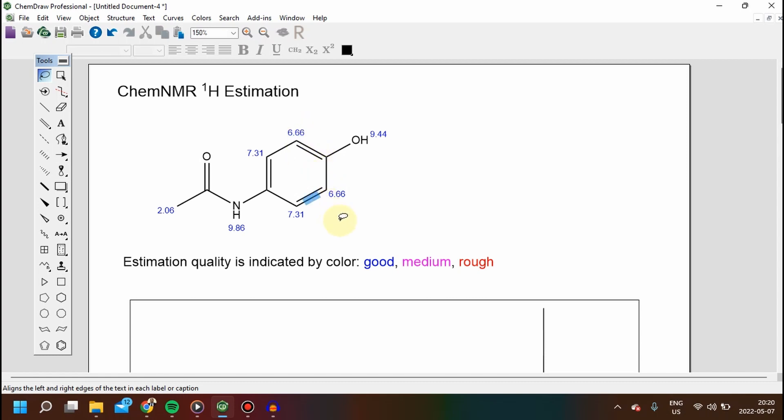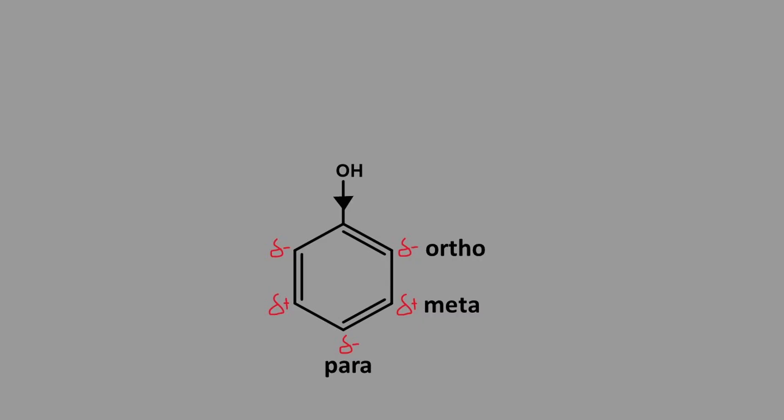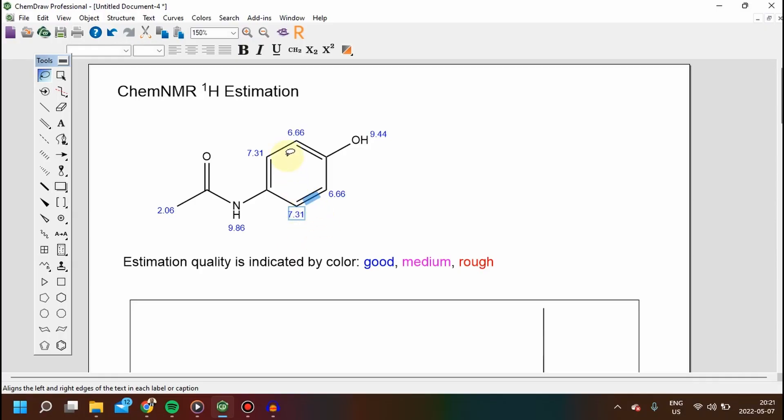In the ortho position, the protons resonate at 6.66, while in the meta position they resonate at 7.31. The OH on the ring is an ortho-para director, which means that the electron density at the meta position is very low. Because of the very low electron density at the meta position, the meta protons are relatively more deshielded compared to the ortho protons.